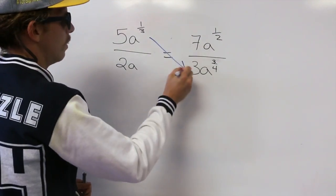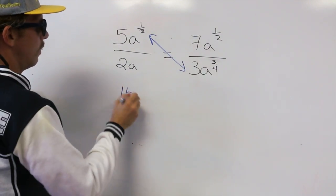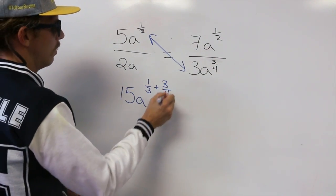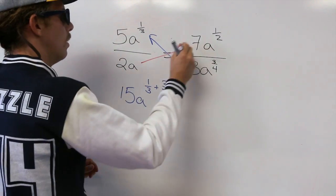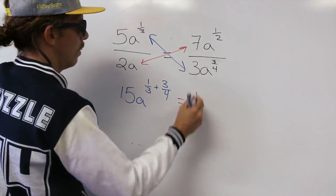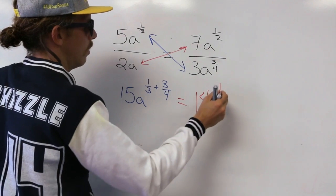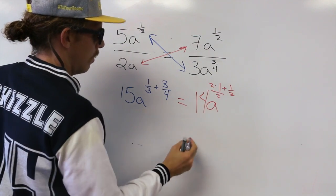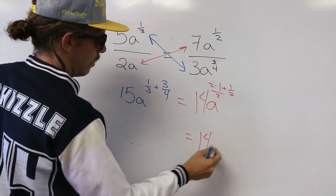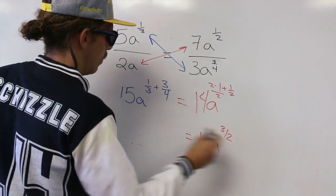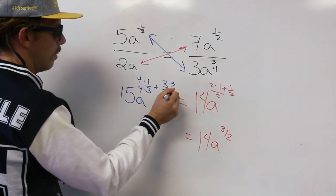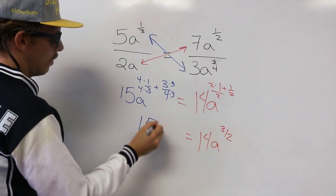Add exponents when we multiply. Get a common base to add these fractions. Add exponents when we multiply. Get a common base to add these fractions.